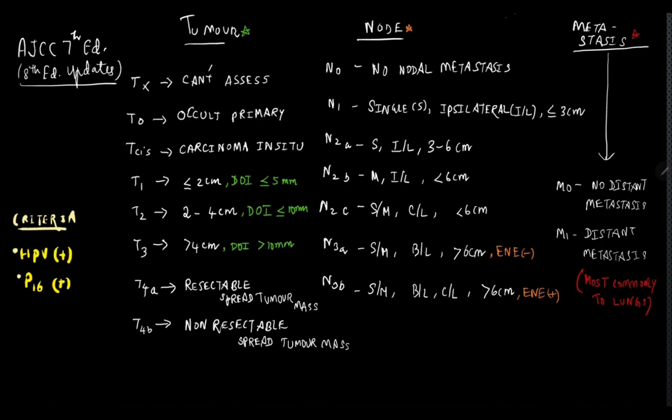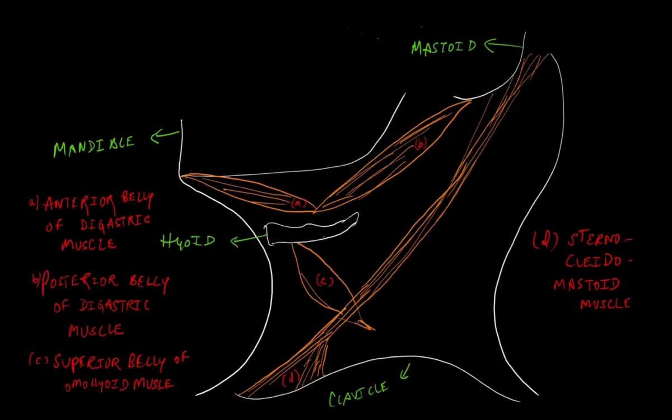Next we will move on to the AJCC classification of oral tumors. Before going to this, a quick recap about the cervical lymph node anatomy. We know that we are dividing the neck into